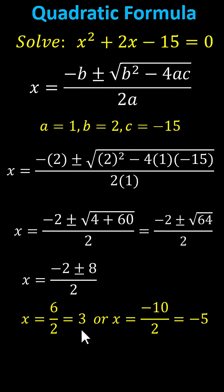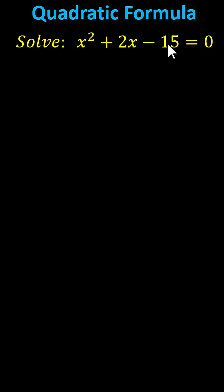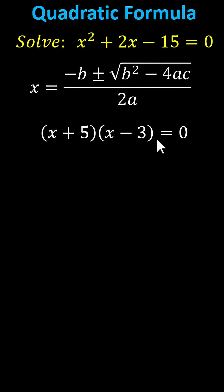Because we have two real rational solutions, we could have solved the equation much faster by recognizing x squared plus 2x minus 15 is factorable. Because the factors of negative 15 that add to positive 2 are negative 5 and positive 3, the factors are x plus 5 and x minus 3.